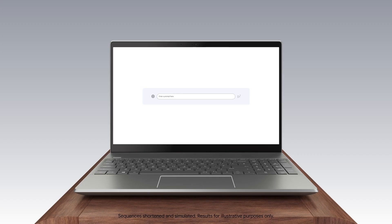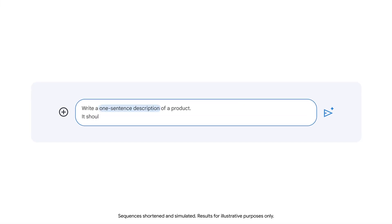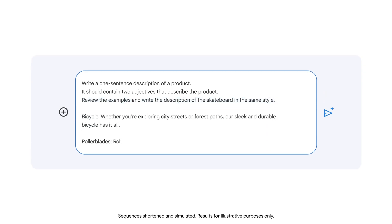We'll start with a prompt that begins with some general instructions: write a one-sentence description of a product, and it should contain two adjectives that describe the product. We also specify that we want Gemini to review the examples we provide and write the description of the skateboard in the same style. Each example contains a label indicating the product being described — a bicycle and rollerblades — and each description is one sentence long and contains two adjectives: sleek and durable for the bicycle, and smooth and stylish for the rollerblades.